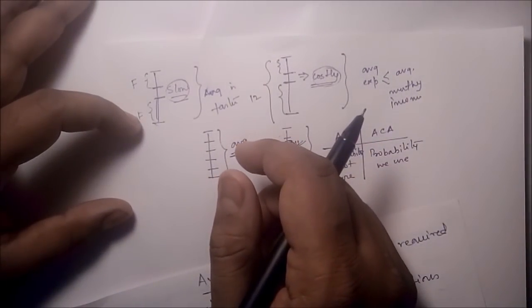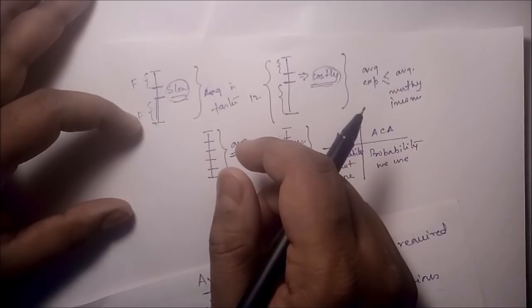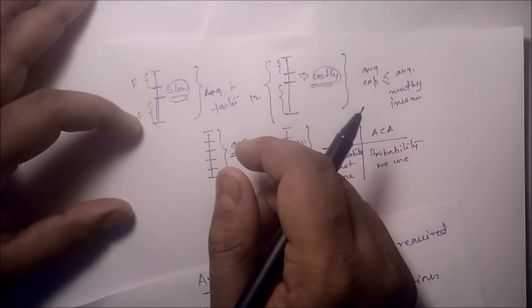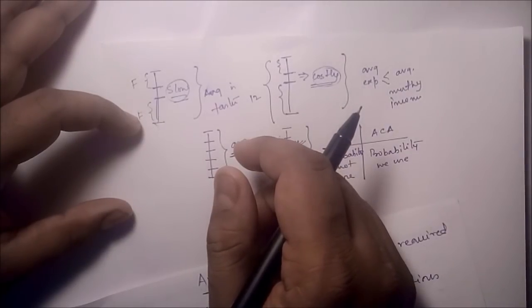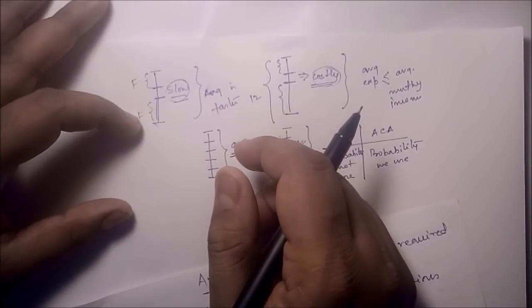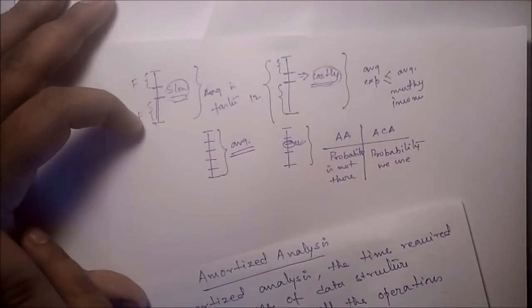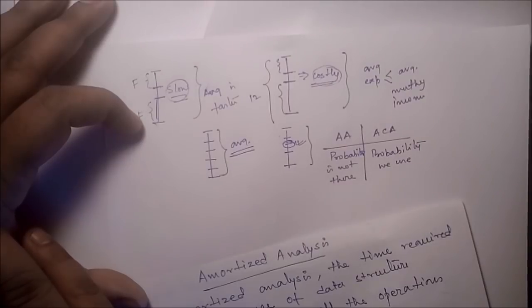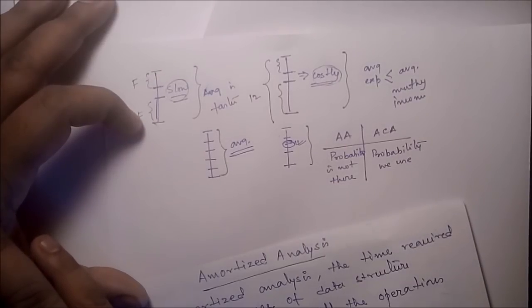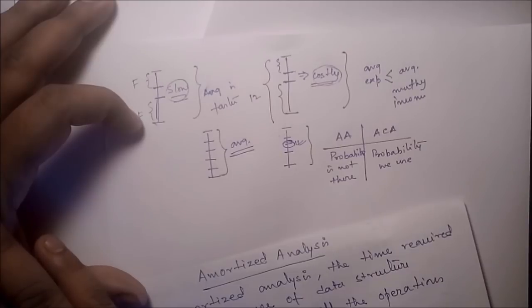Who developed amortized analysis? Professor Robert Tarjan, in the year 1985, in his paper 'Amortized Computational Complexity,' invented this particular technique.